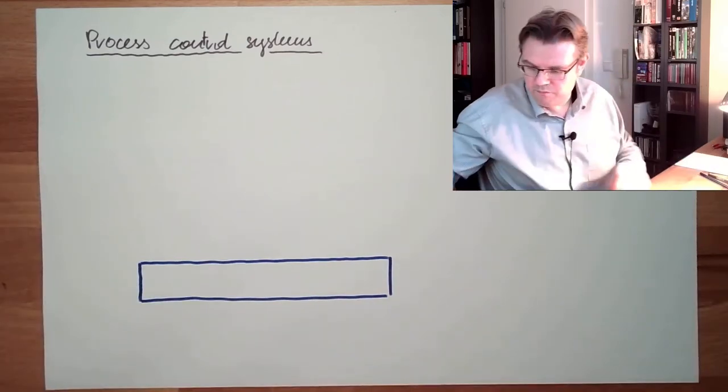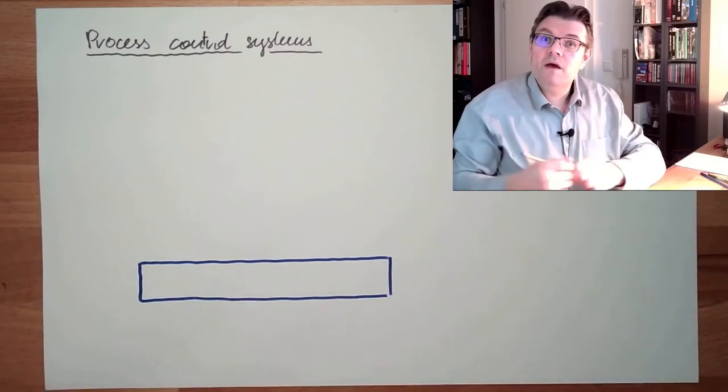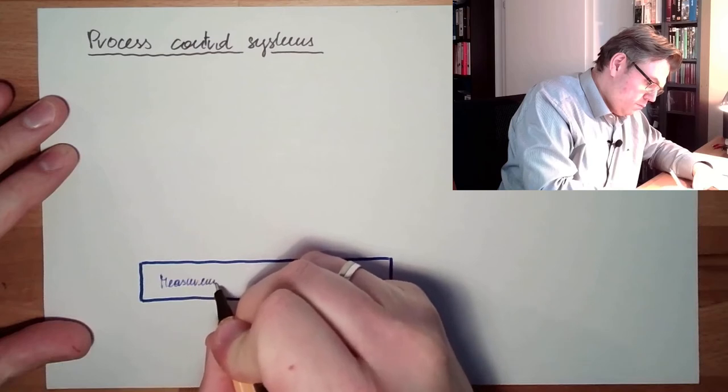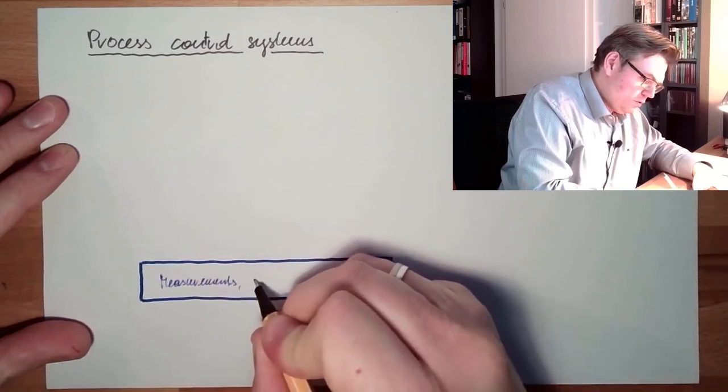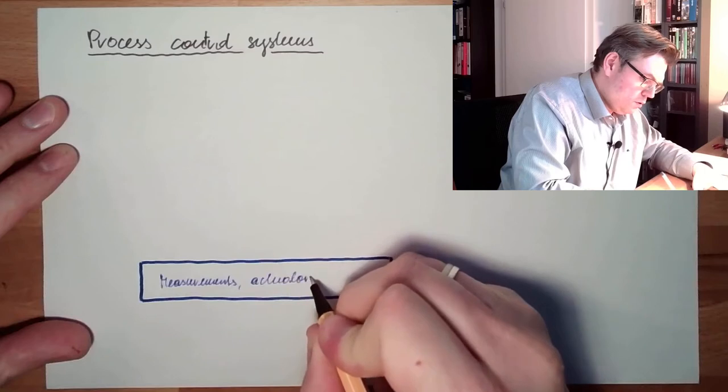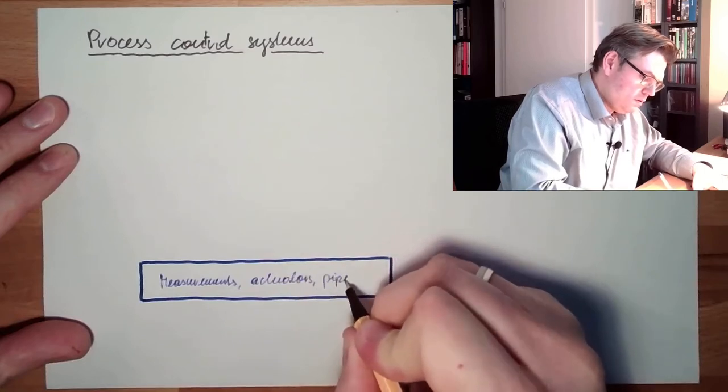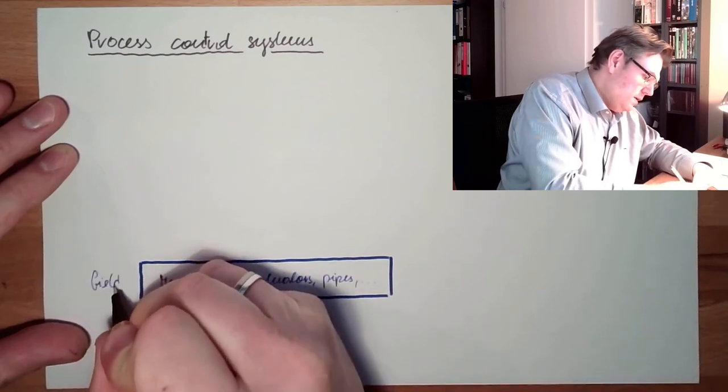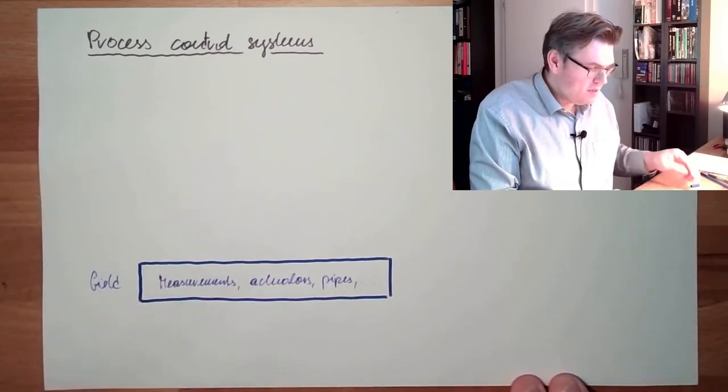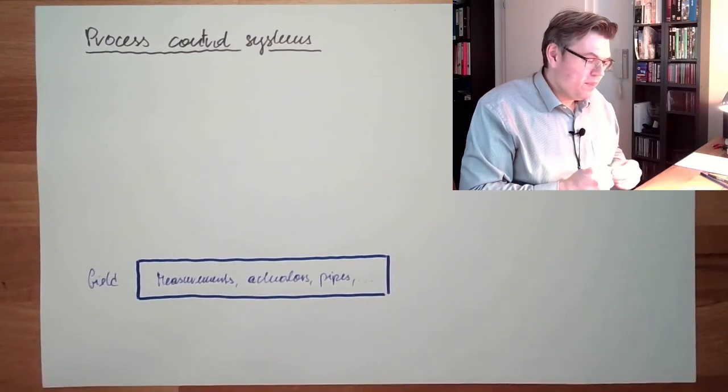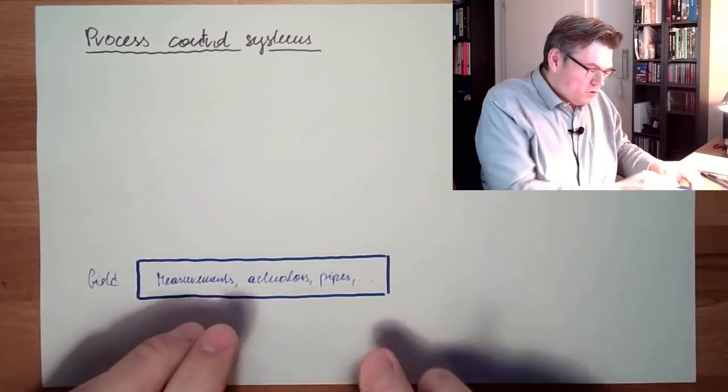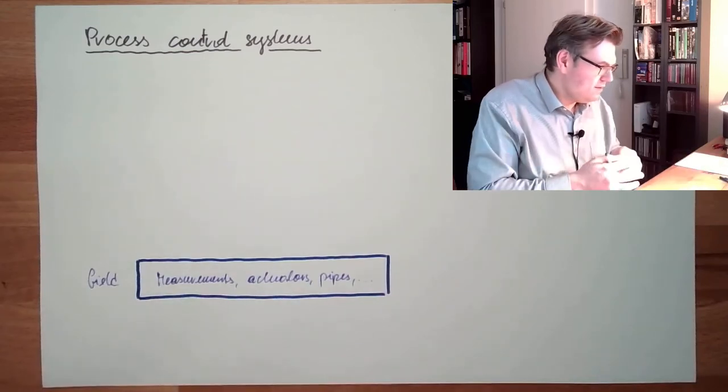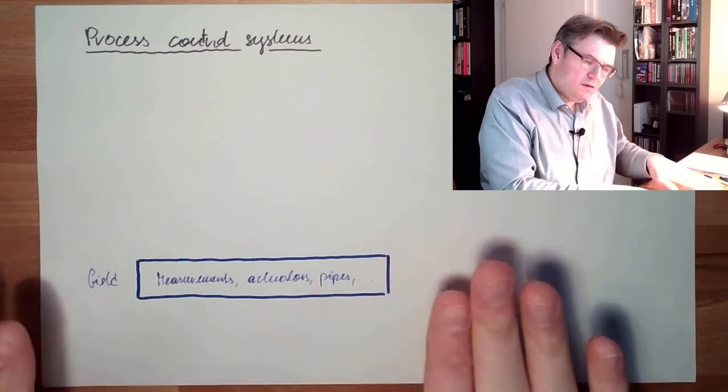Here we have measurements, actuators, sensors, pipes, and all this other stuff. That's the field. This is what actually is doing the job. All those actuators and valves are different things to influence the process, and this needs to be controlled in a certain way.